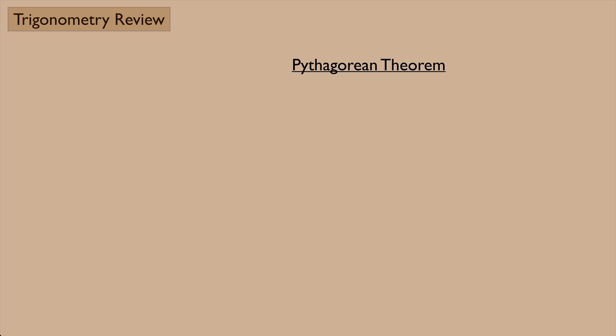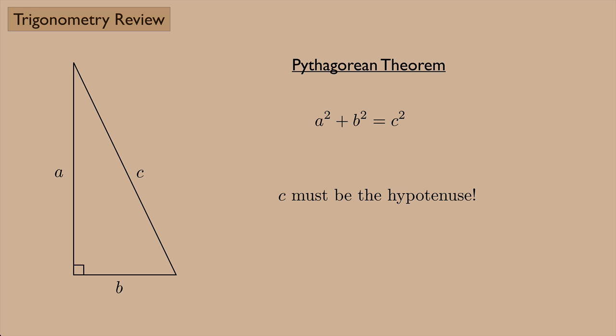So the first thing we'll look at is the Pythagorean theorem. If we have a right triangle, the little box down in the corner means that's a right angle, 90 degrees. We label this side A, this side B, and this side C. The Pythagorean theorem says that A squared plus B squared equals C squared. The thing to remember is that C must be the hypotenuse in this equation, and the hypotenuse is the side of the triangle that's across from the right angle.